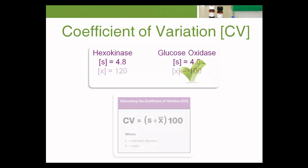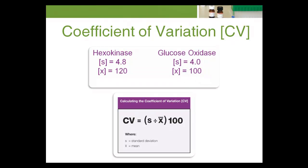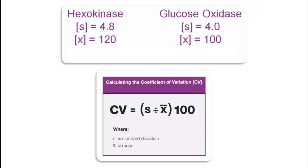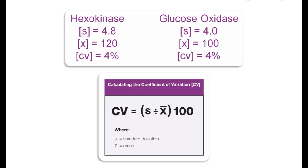If, however, a CV is calculated, it might show that both methods are equally precise. Assume the mean for the hexokinase method is 120, and the glucose oxidase mean is 100. The CV for both methods is then 4% — they are equally precise.